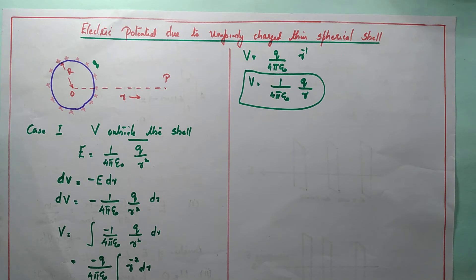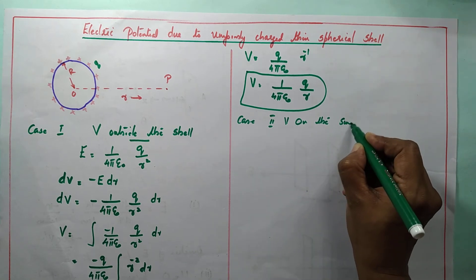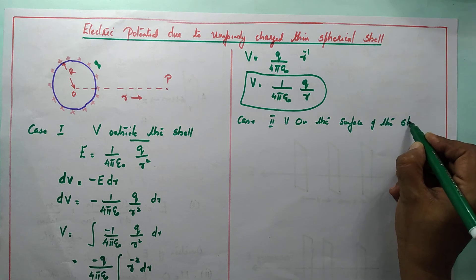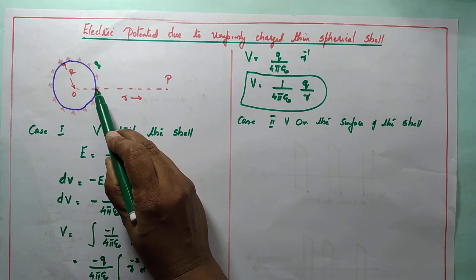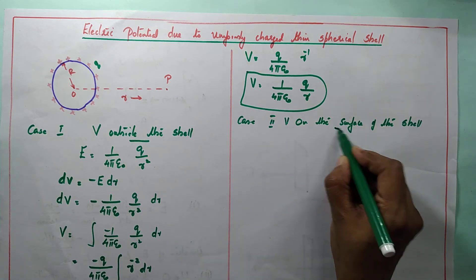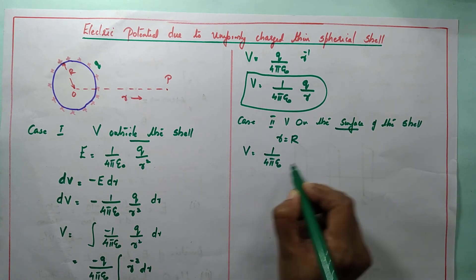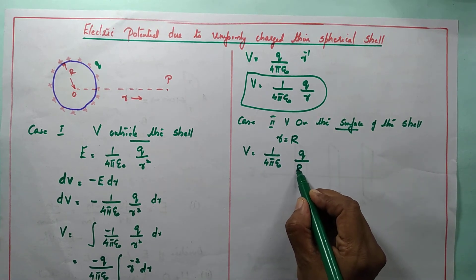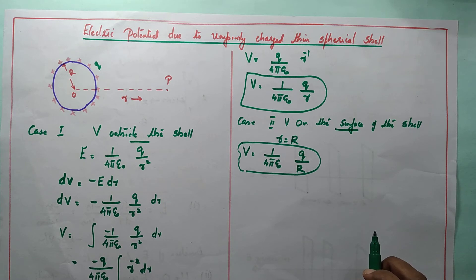The charges are uniformly distributed on the surface and the potential outside is 1 by 4π ε₀ times Q divided by r — that means even though the charges are distributed on the surface, the effect is as if at the center. Case 2: Potential on the surface of the shell. On the surface, point P is on the shell, so small r becomes capital R. Therefore, the potential is directly written as 1 by 4π ε₀ times Q divided by R.